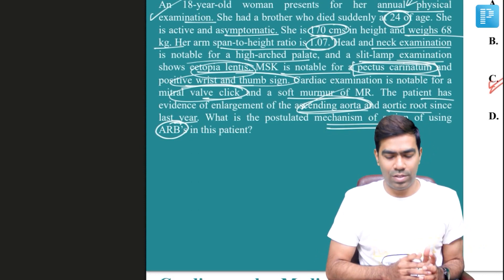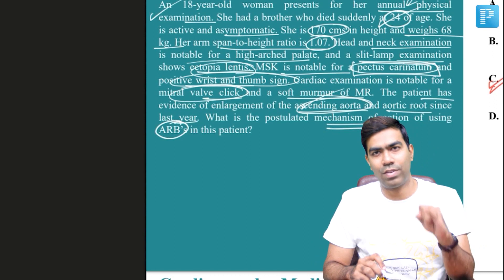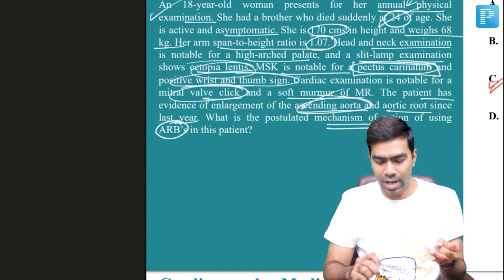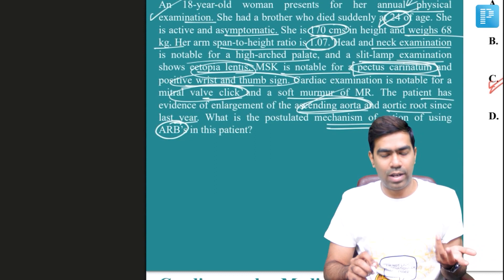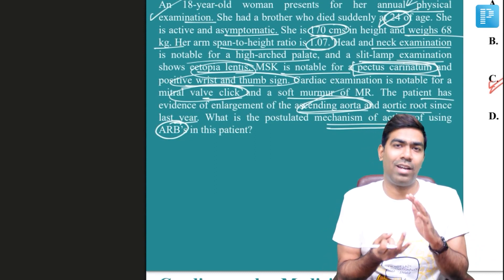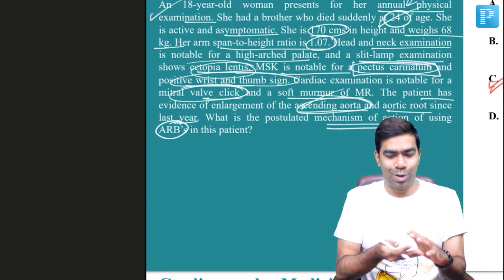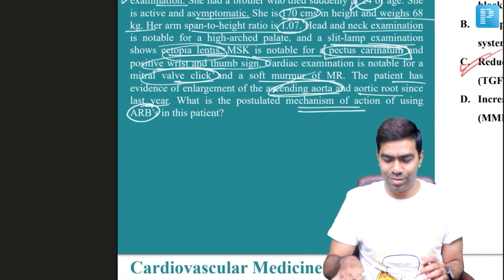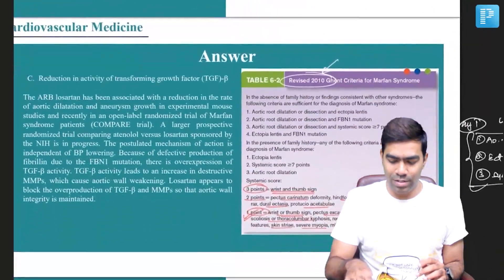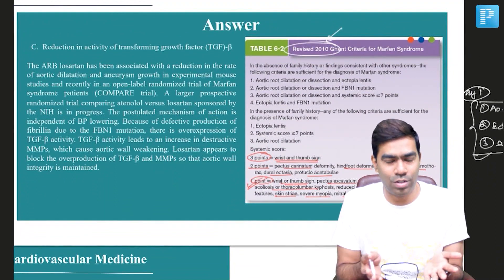As I told you, with family history, if you have any one of ectopia lentis, aortic root dilatation, or systemic features, you can diagnose Marfan syndrome. This patient has all three plus family history. According to the revised Ghent criteria, you don't need anything else—no need for fibrillin-1 gene mutation. You can straightaway diagnose Marfan syndrome.